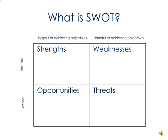On the left-hand column: Strengths and Opportunities. These are positive things — things which are helpful to achieving your objectives. Whereas on the right-hand side, Weaknesses and Threats are harmful to you. They're things which will hinder you, cause problems, things you need to keep an eye out for. They're negative.